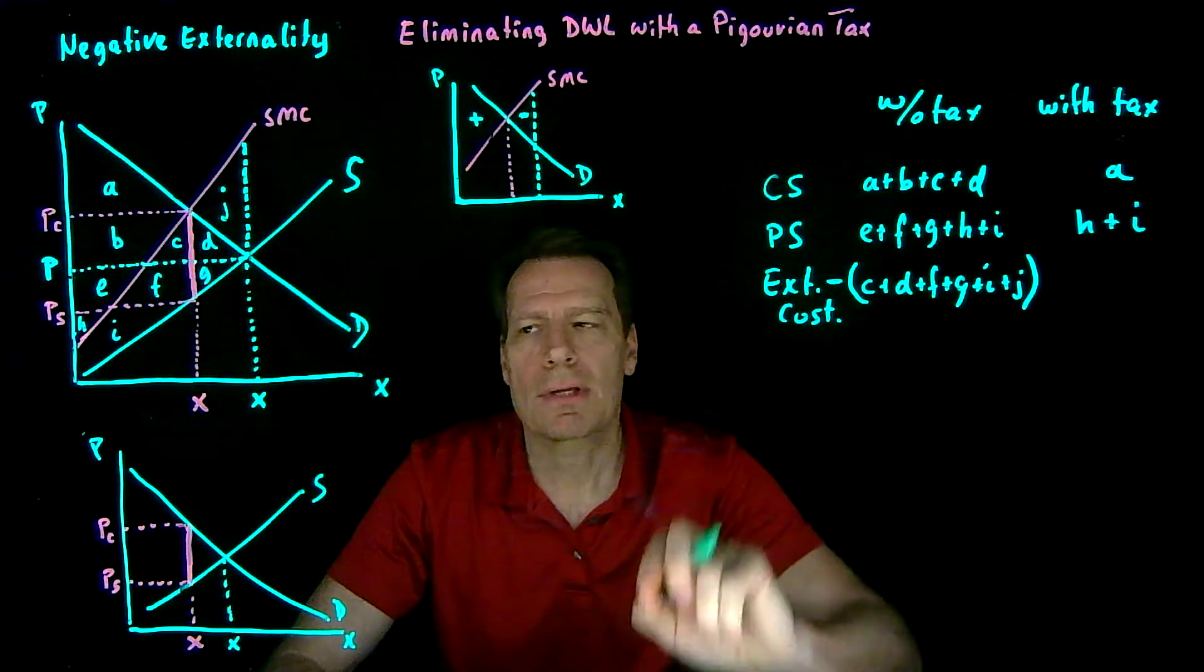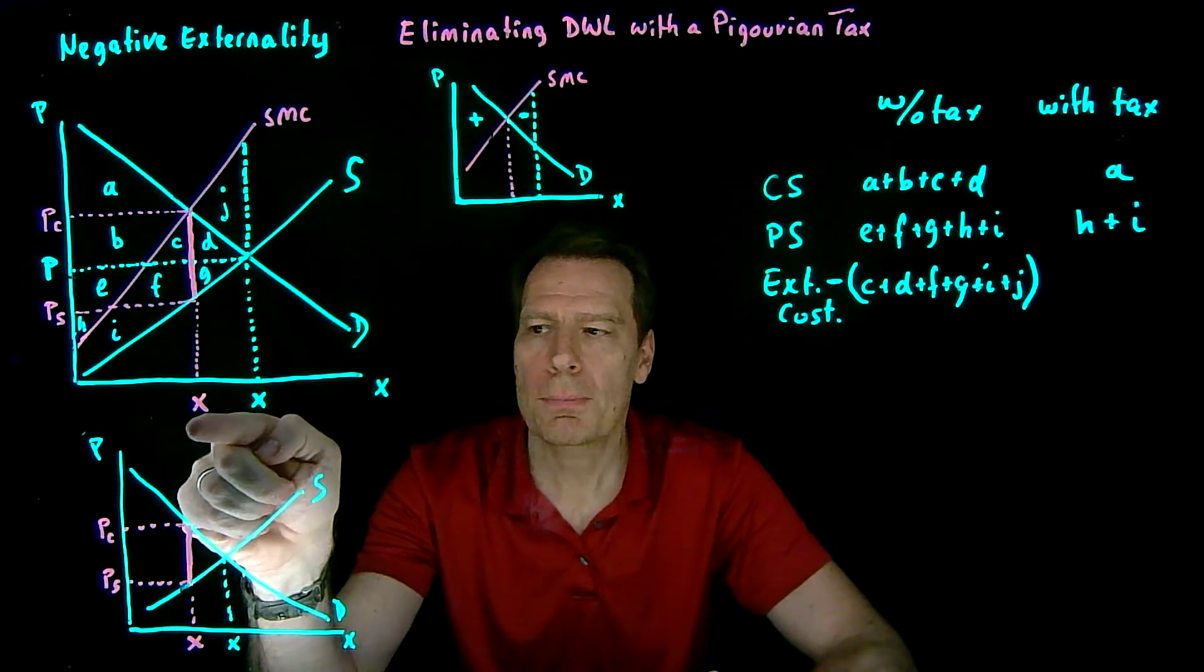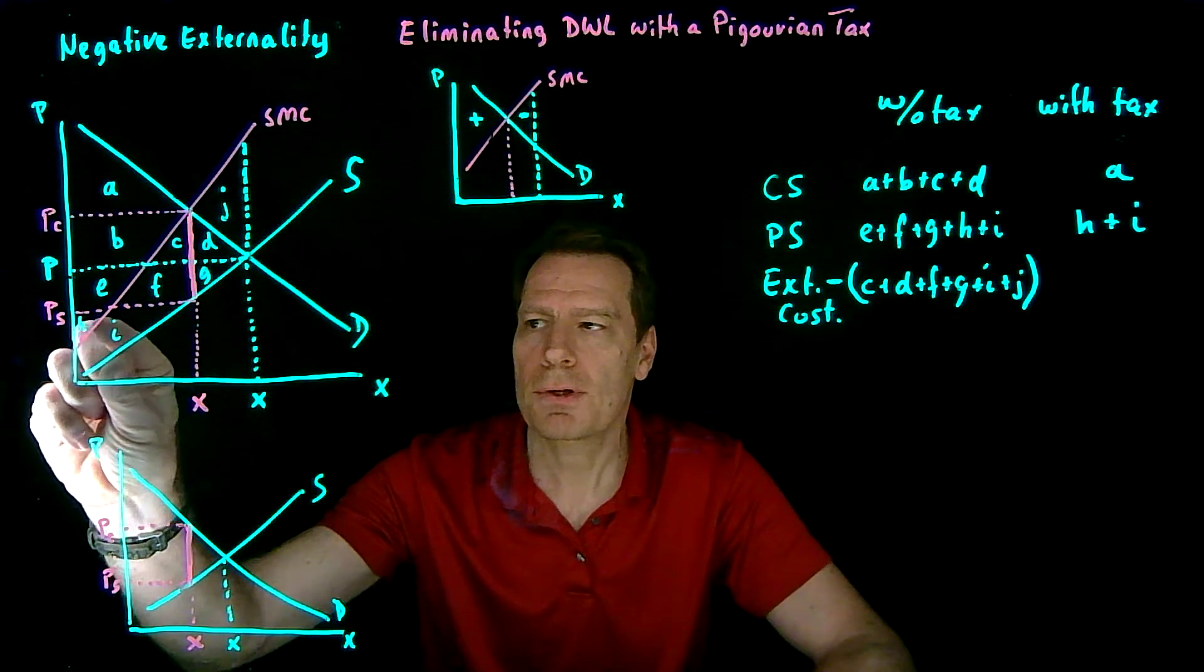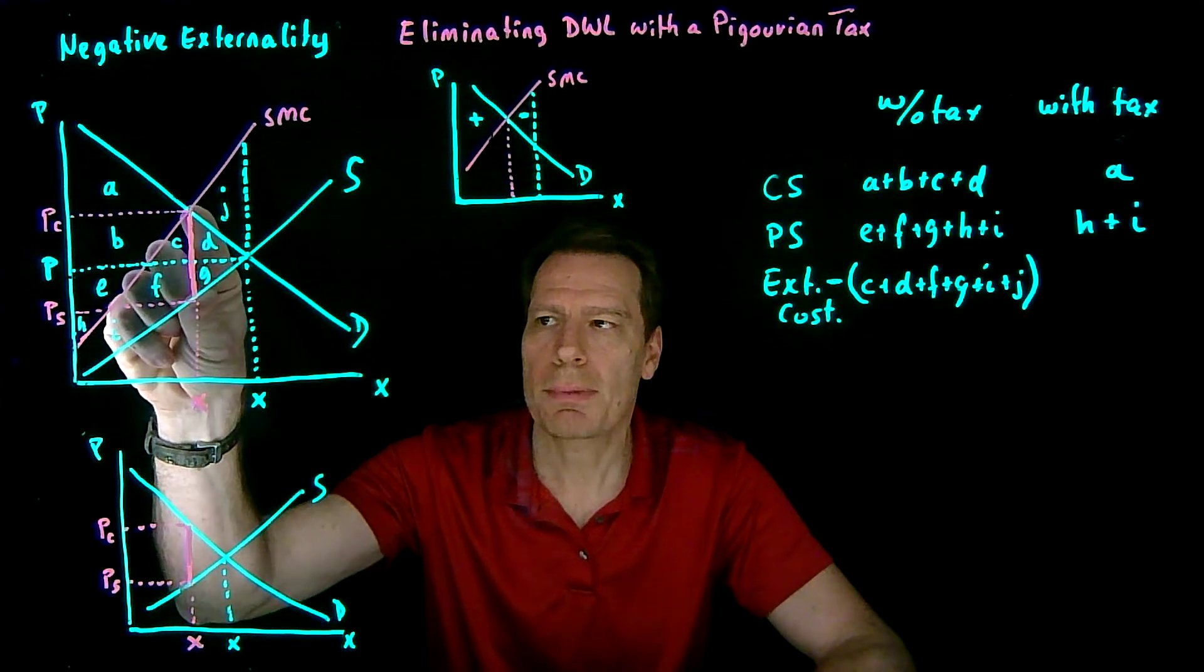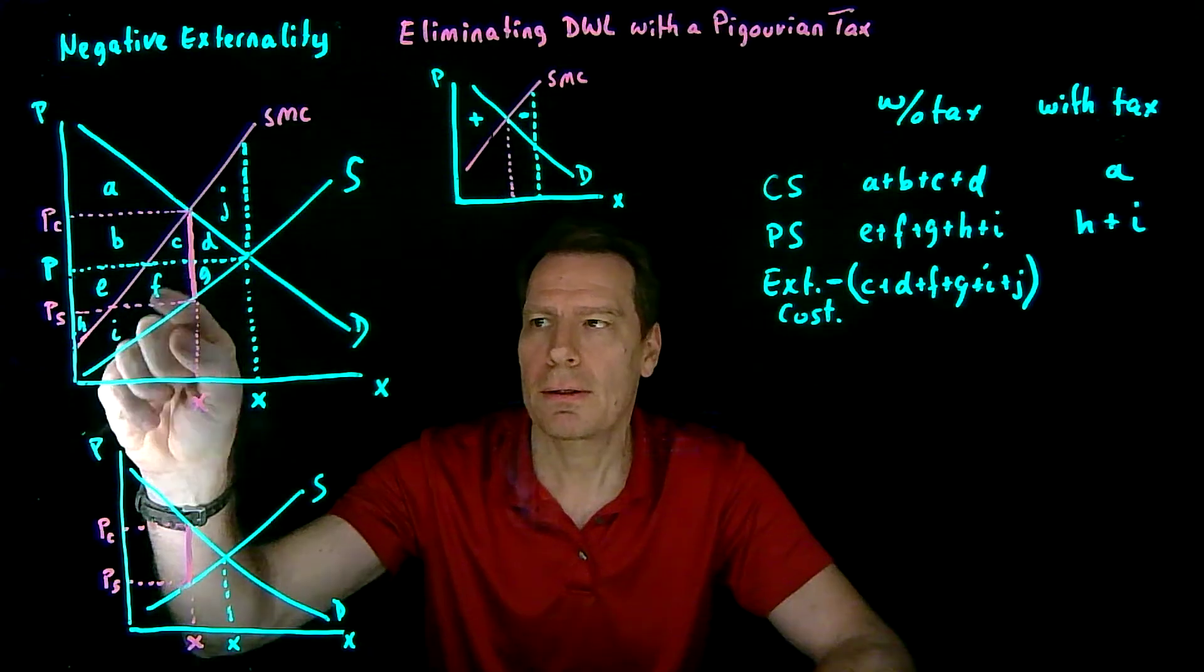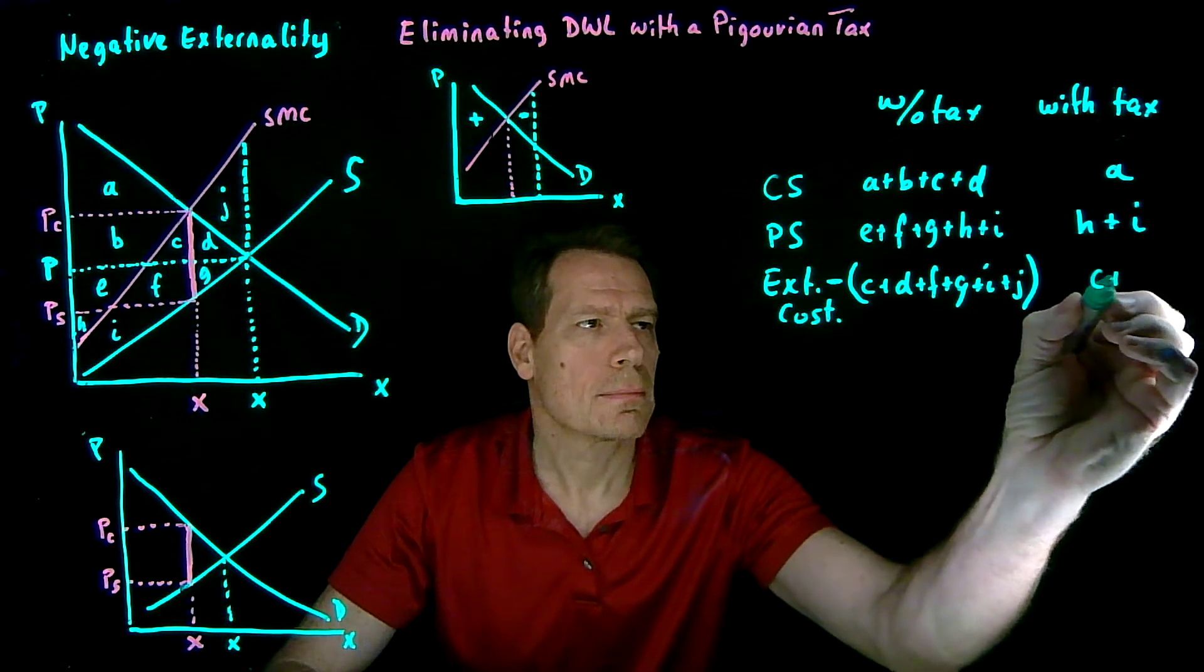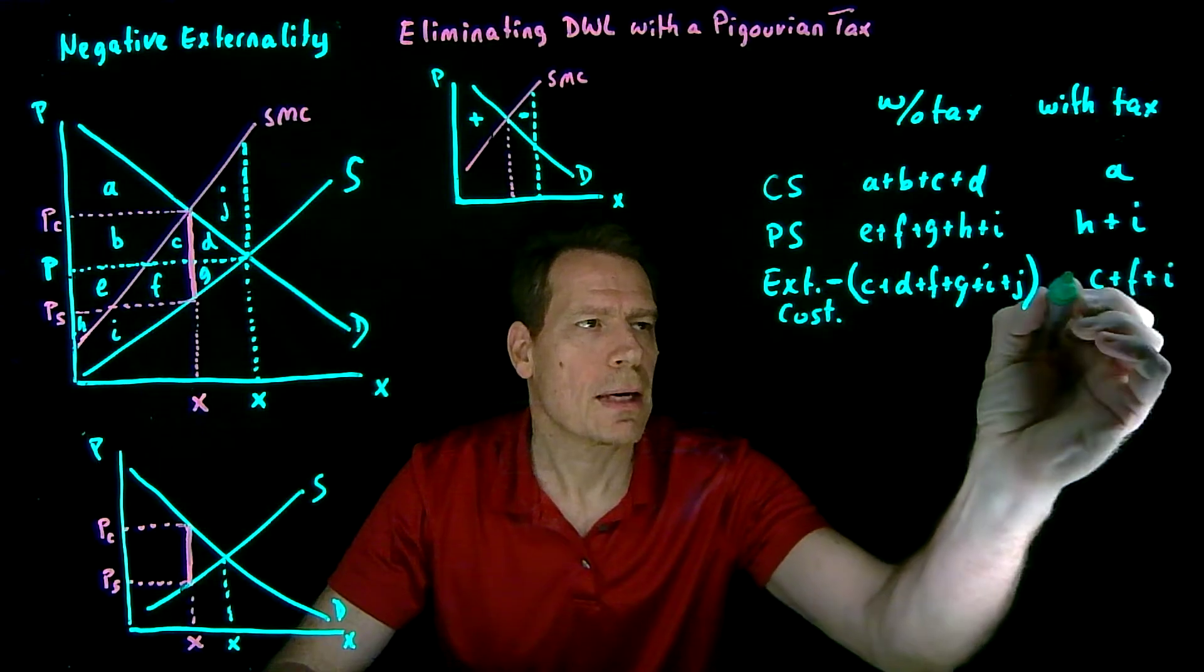What about the externality cost? Well, now we're only producing this magenta quantity. So the externality cost would be the difference between the social marginal cost and the supply curve, up to that quantity, so C, F, and I. And that would be negative.